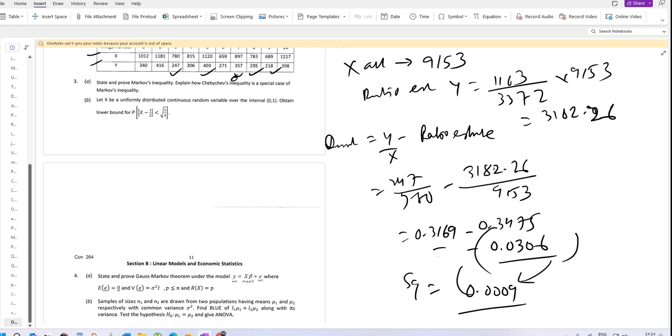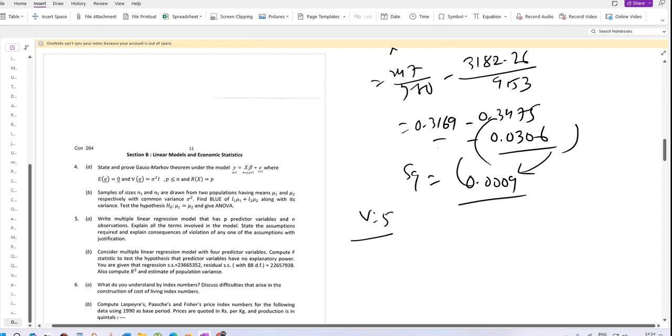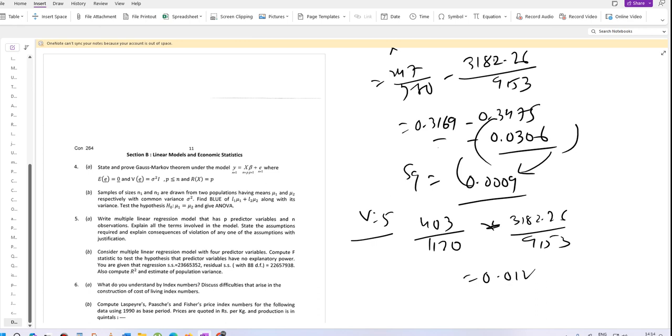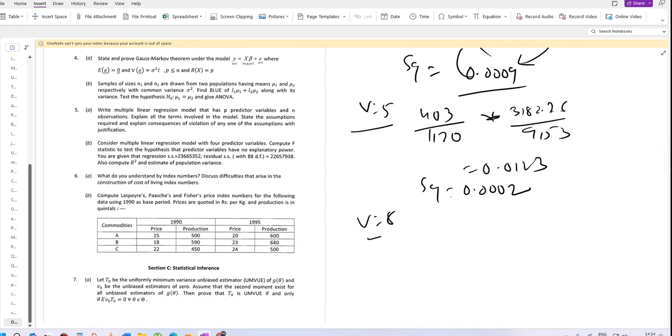Similarly for village 5, we calculate 403 divided by 1120 minus the ratio, which gives a deviation. For village 8, we have 295 divided by 783 minus the ratio. For village 9, we calculate 218 divided by 689 using the same formula.